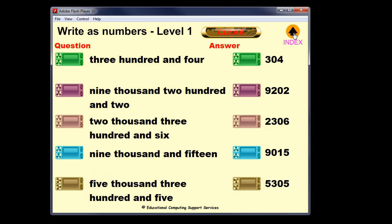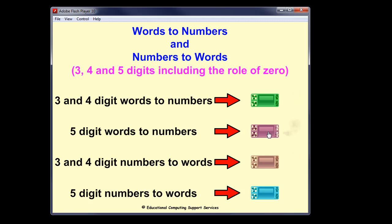Now if we go back to the beginning I've also got 5 digit words. So the first one is 3 and 4 digit. The next one is 5 digit words to numbers.